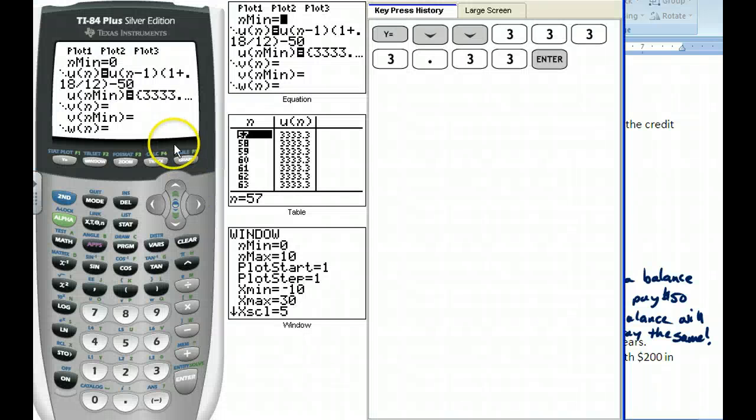If you look on your calculator, I can put in the same exact equation, $3,333.33. Even five years later, you're still paying the same amount. So this $50 is just servicing the interest on your loan, and you'll never get out of it.